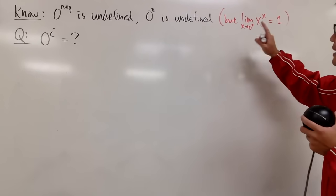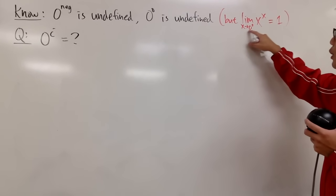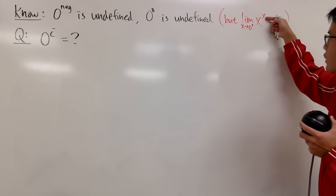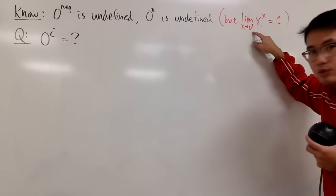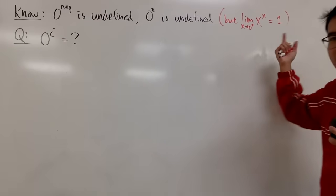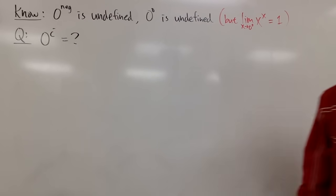Now, don't get confused with the limit as x approaching 0 plus of x to the x power. If you take the limit of this function when x is approaching 0 plus, you do have an answer, and the answer is 1. And you guys can check my other video for the detailed explanation on this.